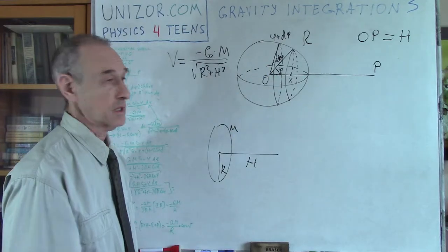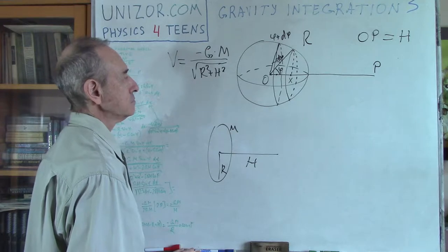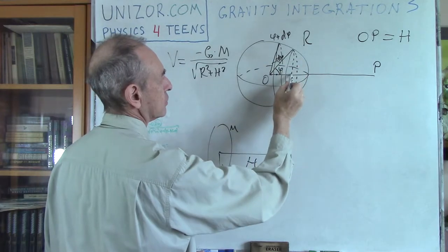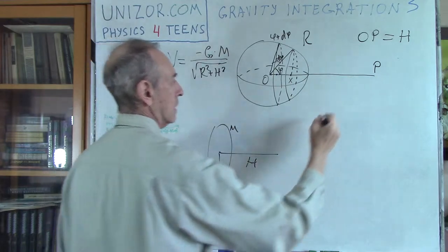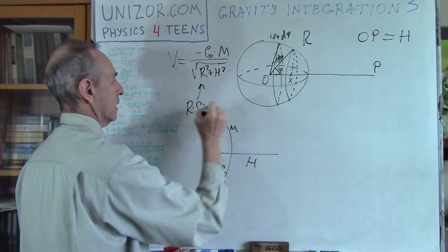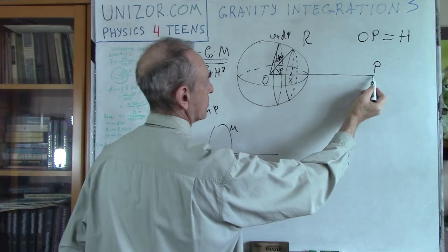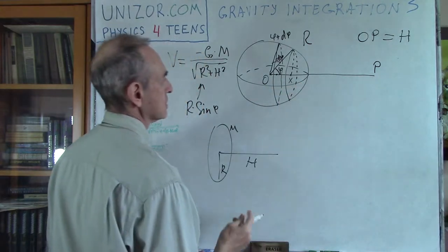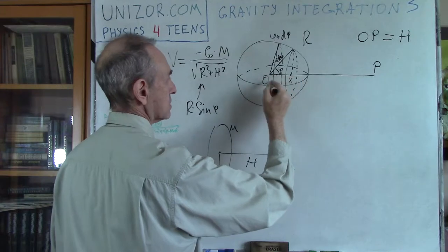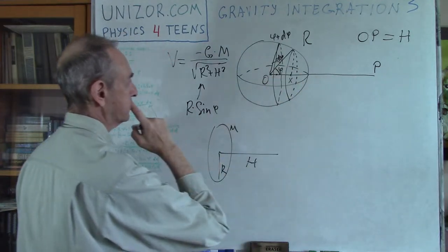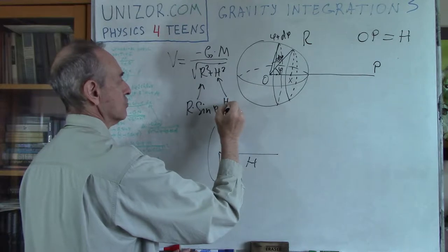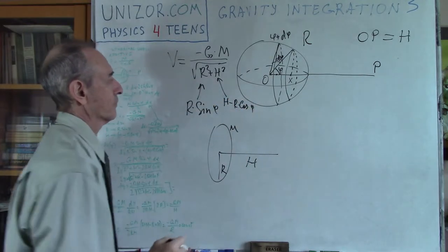We have a different case here, so let's start from the beginning. What is R — the radius of the ring? The radius of the ring is the distance from here to here, which is R times sine phi. So instead of R, I should put R sine phi. H is the distance from the center of the ring to the point of interest. From O to P is H, and from O to X is R times cosine phi. So the difference, H minus R cosine phi, should go instead of H.